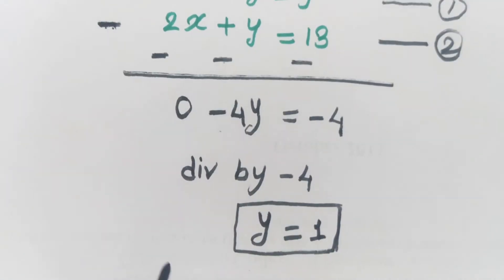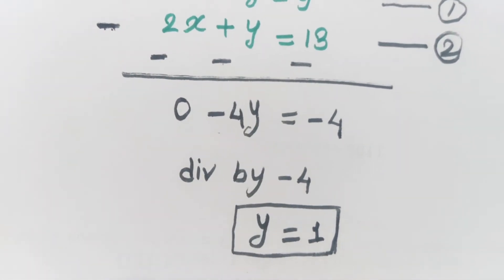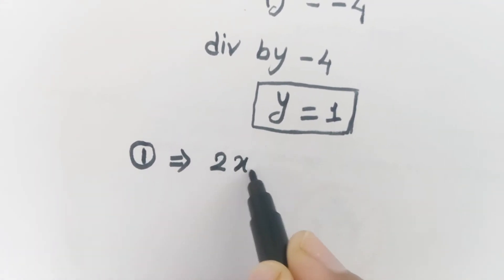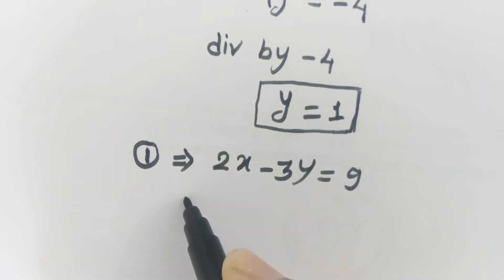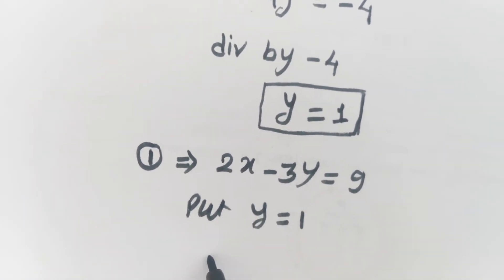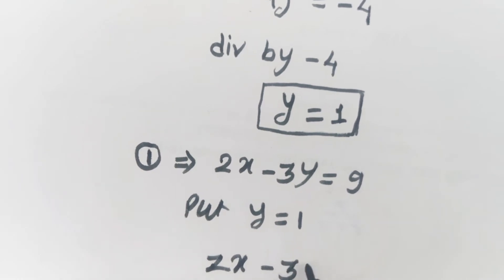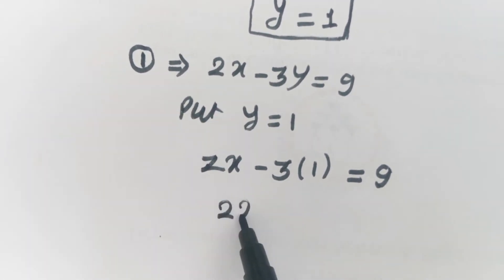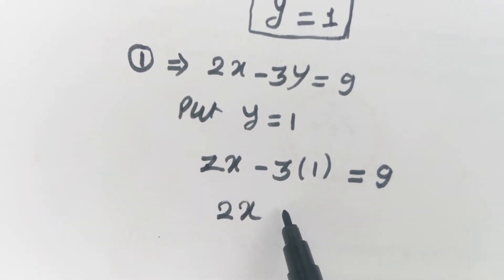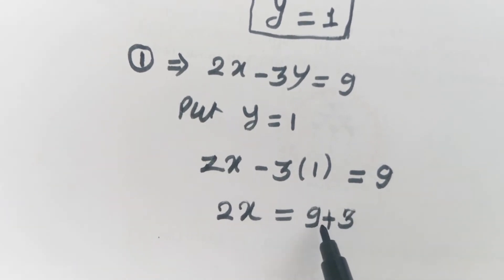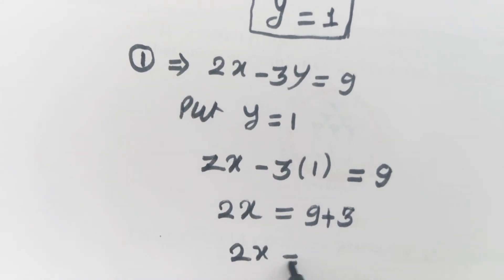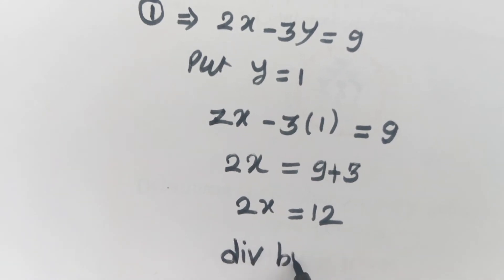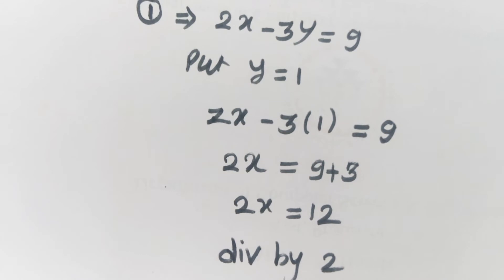We substitute y equals 1 into equation 1. Equation 1 is: 2x minus 3y equals 9. Putting y equals 1, we get 2x minus 3 times 1 equals 9, which is 2x minus 3 equals 9. Shifting minus 3 to the right-hand side, we get 2x equals 9 plus 3, which is 12. Dividing both sides by 2, we get x equals 6.